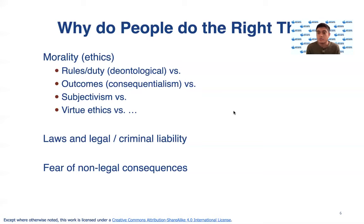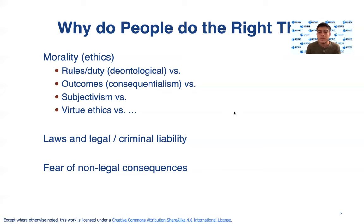The right thing to do can include a different set of criteria in different situations. It could be what is legal for you to do, what is ethical in terms of societal morality that you live by, the consequences of your decision and whether it will negatively impact someone, and the duties and responsibilities that you in your capacity have and need to follow.